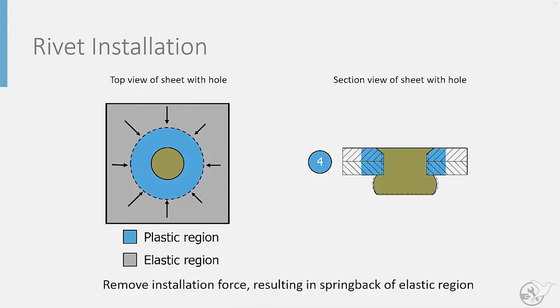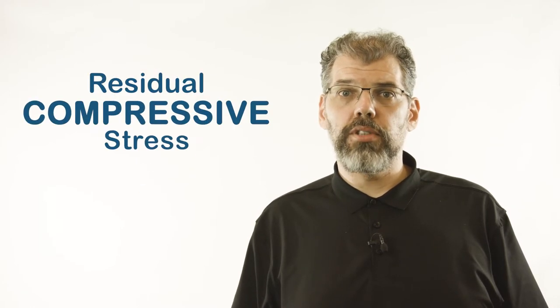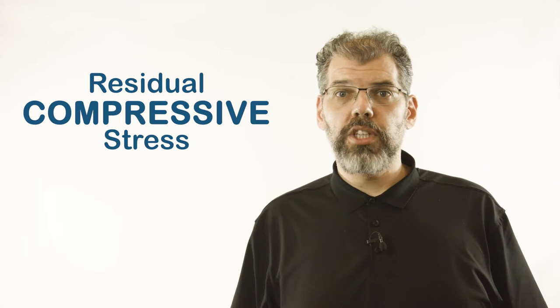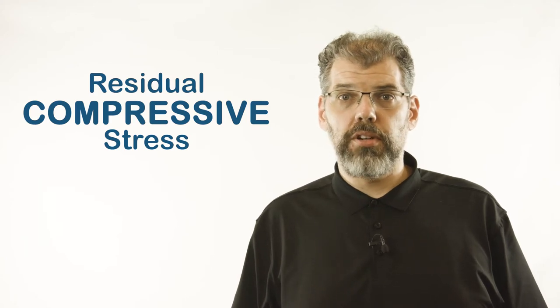The surrounding sheet will thus compress the plastic region, trying to push it back into its original shape. This final state leaves the material around the rivet hole in a state of residual compressive stress, which helps reduce the stress concentration.